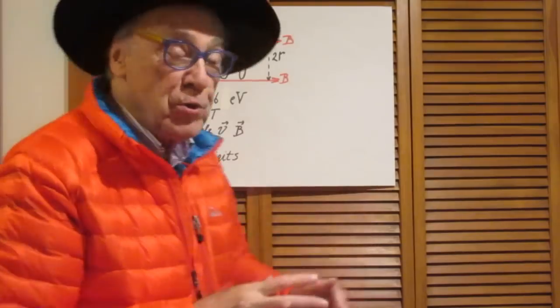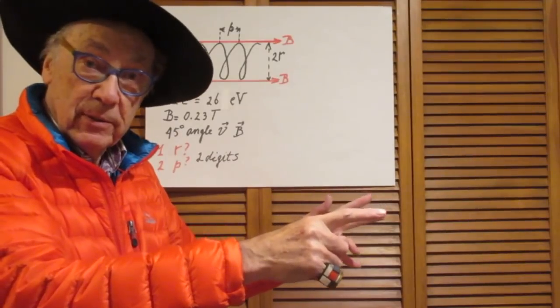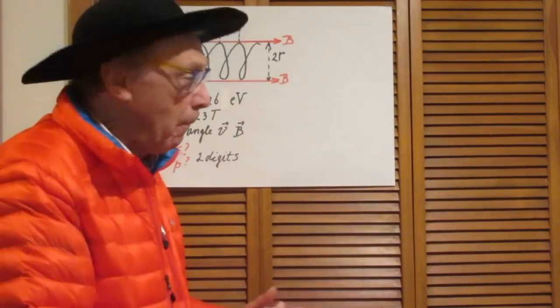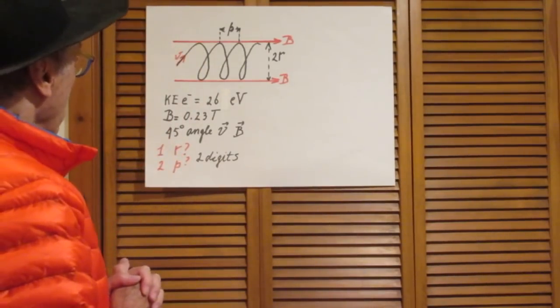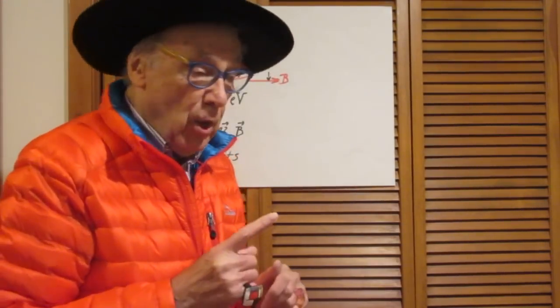I have a homogeneous magnetic field going in this direction. It's the same everywhere. And I have an electron which I shoot into that magnetic field. And the angle between the velocity of the electron and the magnetic field is 45 degrees.